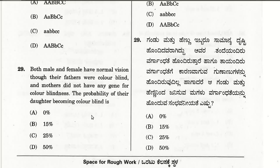The twenty-ninth question: both male and female have normal vision though their fathers were colorblind, and mothers did not carry any gene for colorblindness. The probability of their daughter becoming colorblind is 0%, because colorblindness is X-linked. For daughters to be colorblind, both X chromosomes must carry the colorblindness gene. They can be carriers but cannot exhibit colorblindness, so the probability is 0%.